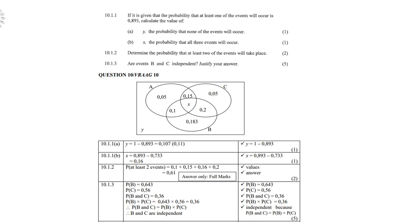Find X. Now, where is X situated? Where all three events occur — the probability that all three events will occur. What you do is add up all those values: 0.05 plus 0.15 plus 0.05 plus 0.1 plus 0.2 plus 0.183. If you add them all up, you get 0.733. So you subtract that from 0.893, and your answer is 0.16.